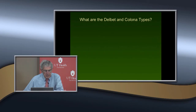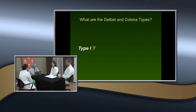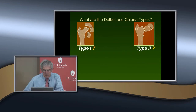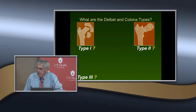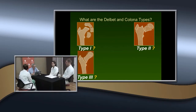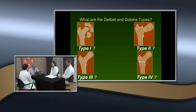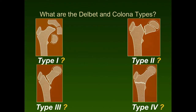Looking at the Delbet-Colonna types: Type 1 is transphyseal. Type 2 is transcervical — right through the neck of the proximal femur. Type 3 is the cervical-intertrochanteric, which many people call the base-neck type of fracture. Type 4 is intertrochanteric, occurring in the intertrochanteric area. Each of these requires a different type of treatment.